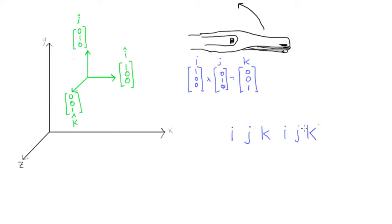Okay, so now what we do is, if you move to the right, you read I, J, K, I, J, K. So we had I cross J is equal to K. We'll look at this, I, J, K. So if we go this way,